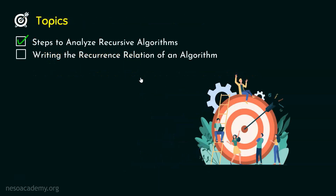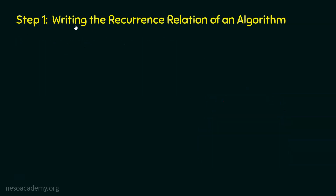Now we know the steps involved in order to analyze our recursive algorithms. Let's move to the next topic, where we will discuss how to write the recurrence relation of an algorithm. Remember, this is step number one — writing the recurrence relation of the algorithm, precisely the recursive algorithm. Before we write the recurrence relation of a recursive algorithm, let's first understand what is the meaning of a recurrence relation.